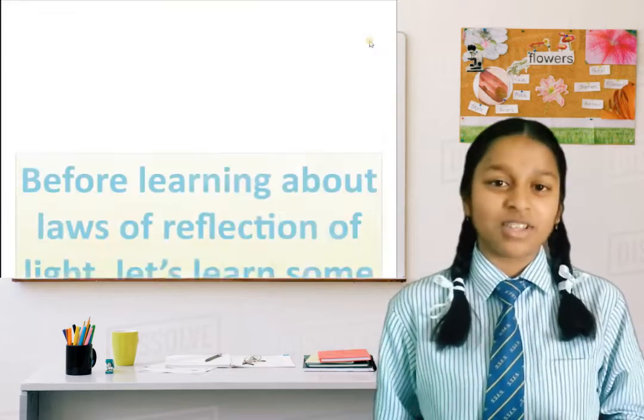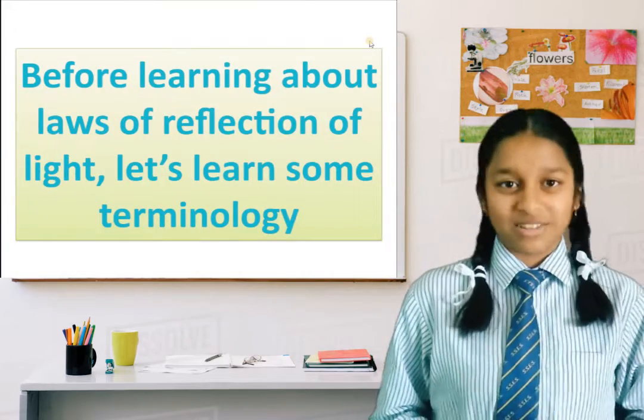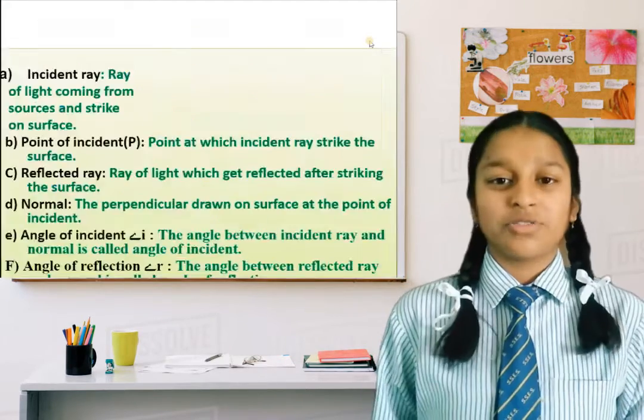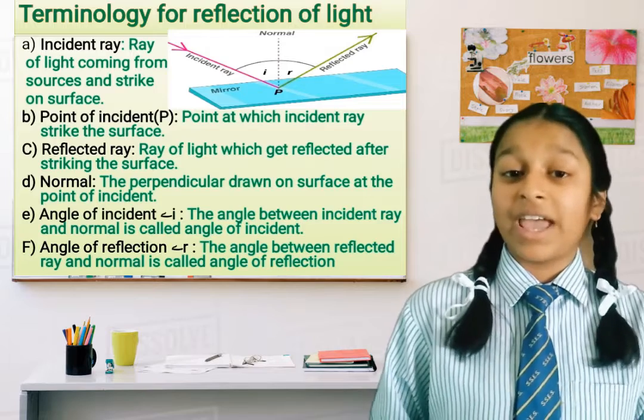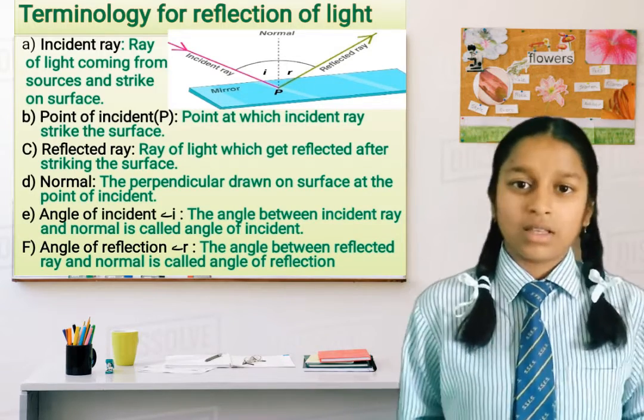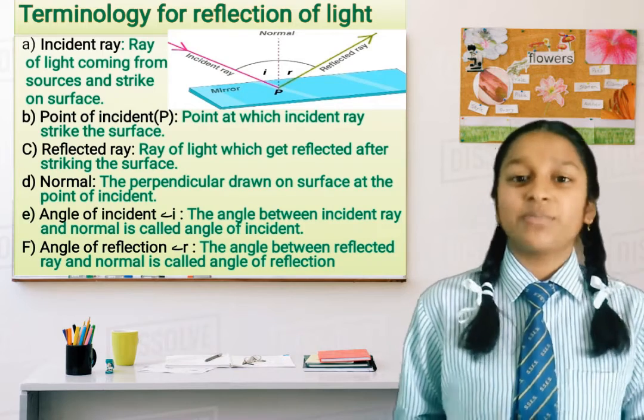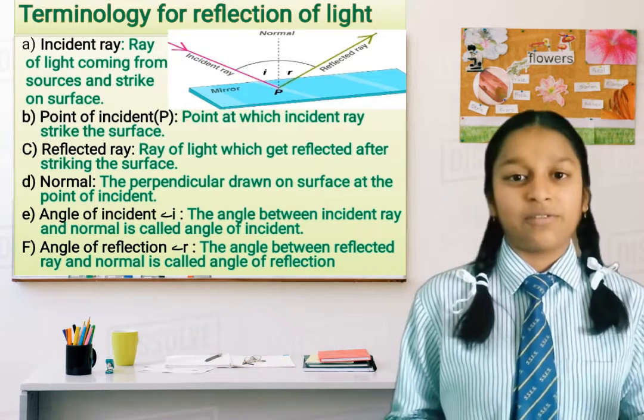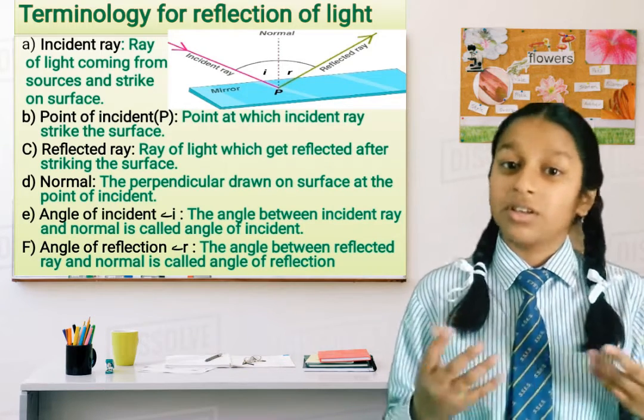Before learning about laws of reflection of light, let's learn some terminology. First is incident ray: the ray of light which comes from the source and strikes a surface. Second is point of incidence: the point at which a ray of light strikes the surface.